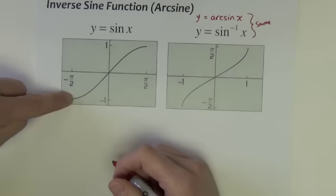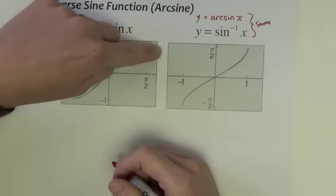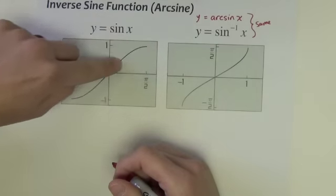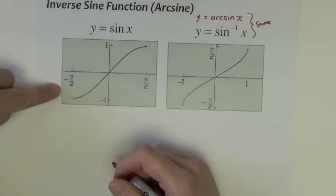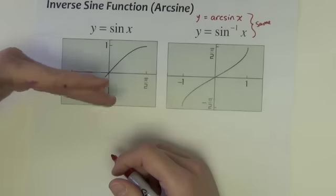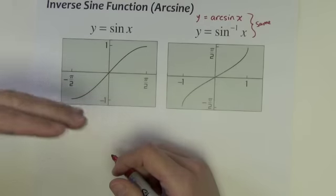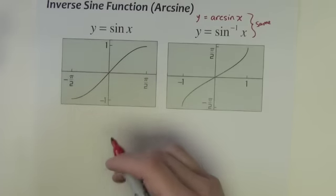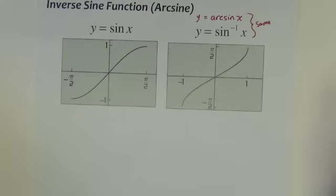Well, the sine function is a wave function. It would continue going up and down, etc., as it goes left and right. So it would not pass a horizontal line test if we took the whole thing. So what we do is we chop most of it off.